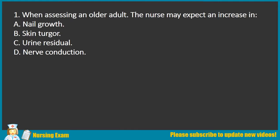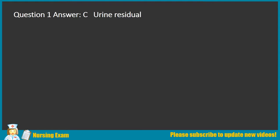Question 1. When assessing an older adult, the nurse may expect an increase in: A. Nail growth, B. Skin turgor, C. Urine residual, D. Nerve conduction. Answer: C. Urine residual.